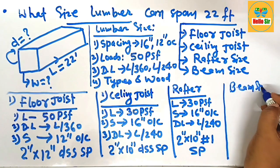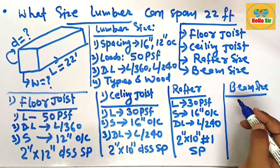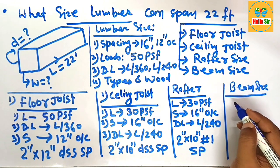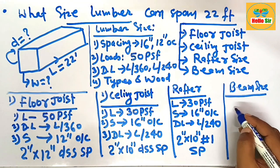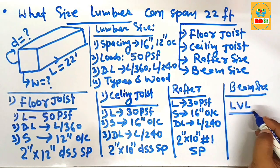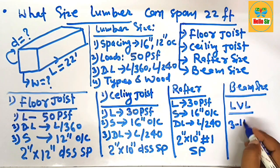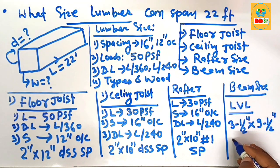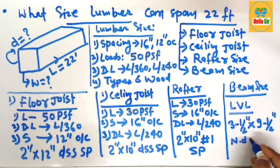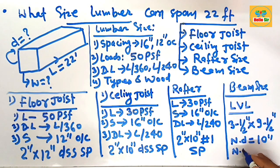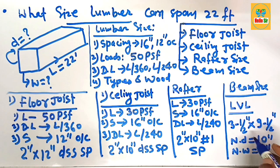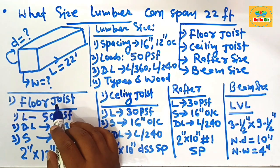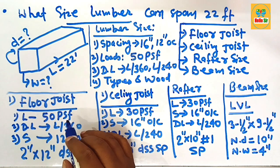For beam size, standard dimensional lumber is not sufficient because of sagging risk over 22 feet, so engineered wood is required. You should use LVL — laminated veneer lumber — with an actual thickness of 3.5 inches by 9.5 inches deep, which has a nominal size of 4 inches wide by 10 inches deep. This LVL beam size is required to span 22 feet.